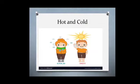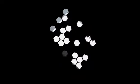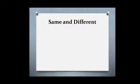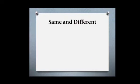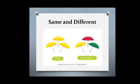Our last concept in this session is same and different. We can see three apples, out of which two apples are same — red in colour — and one apple is different, which is green in colour. Here we can see three yellow umbrellas which seem to be the same. The other picture shows different colourful umbrellas, which means it's different.